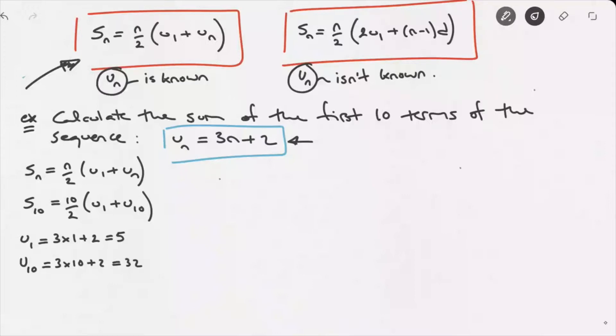So the sum of the first ten terms will be S10 equals 10 over 2 times 5 plus 32. Simplifying this a bit, that leads us to 5 times 37. And that should lead us to 185. So the sum of the first ten terms of this sequence is equal to 185.